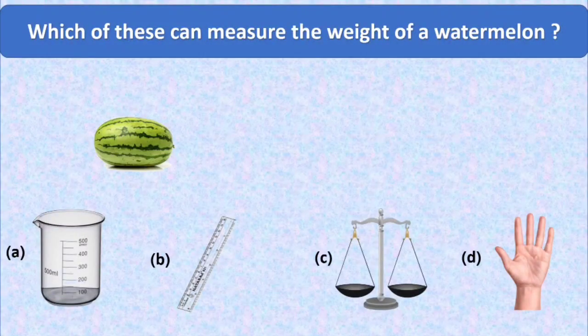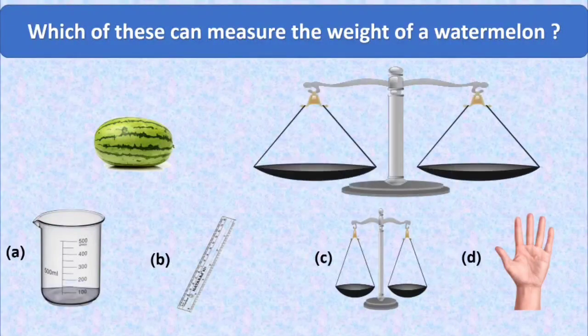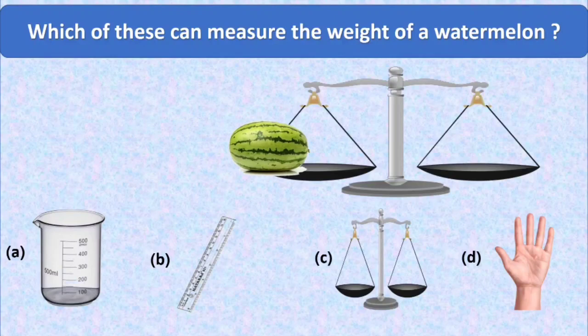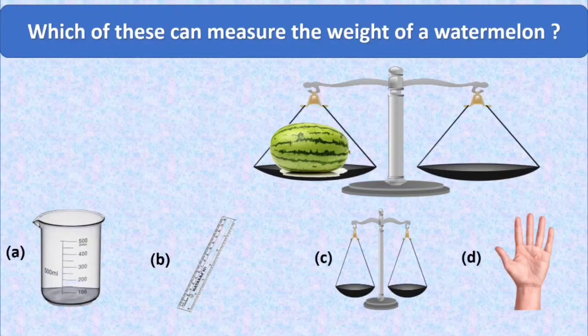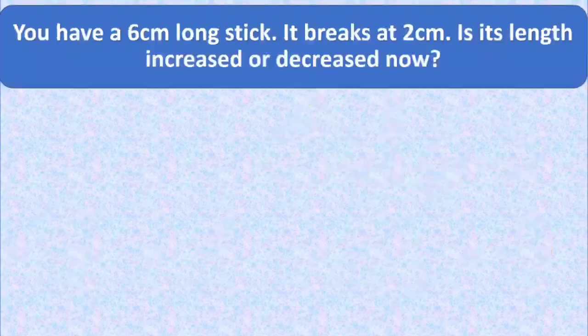You know when you go to buy vegetables and fruits, you have seen there a balance pan or a weighing balance is used to measure these things. So watermelon is also weighed in a weighing balance. Option C, weighing balance is the correct option here and we put a tick mark at option C.